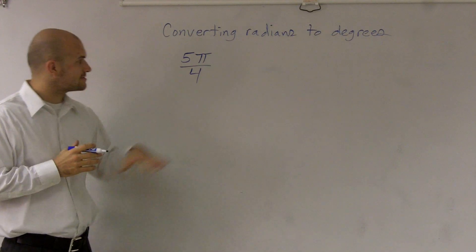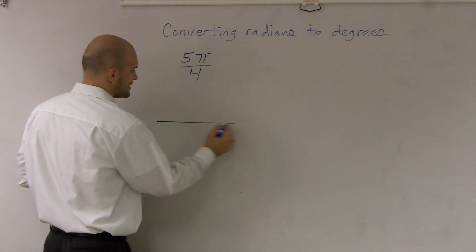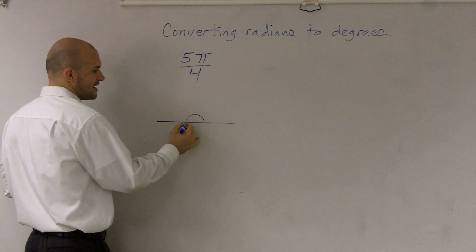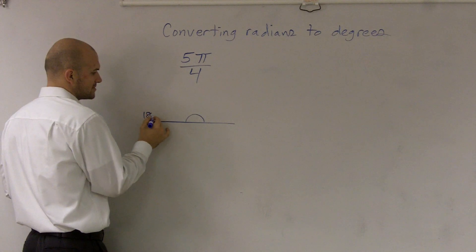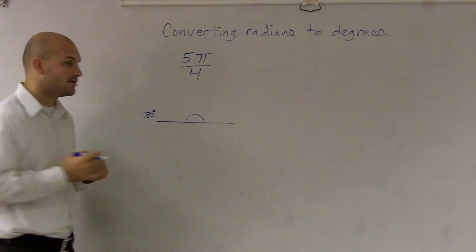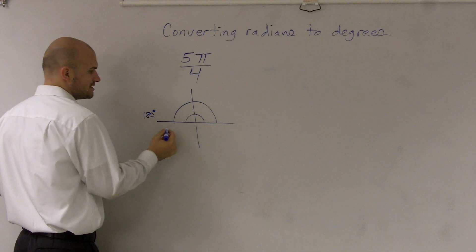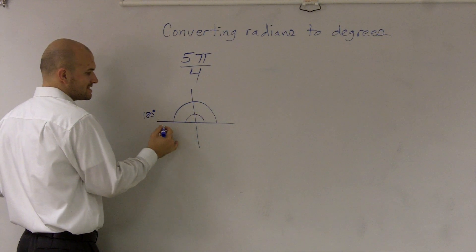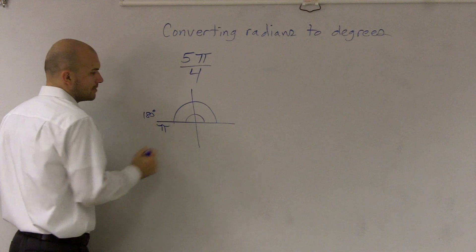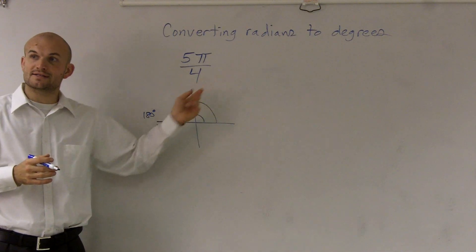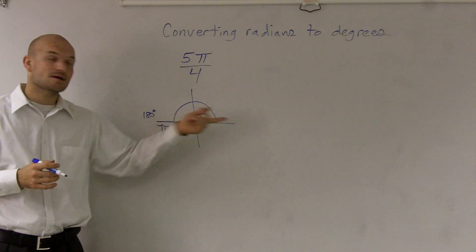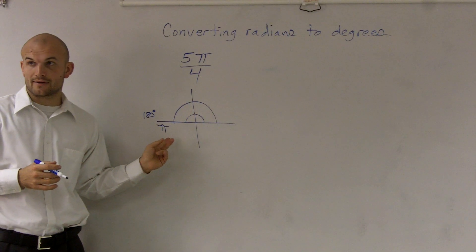Radians to degrees. So remember guys, when we're talking about radians and degrees, there's a couple things you guys remember. Do you remember that a straight angle is 180 degrees? Yes. Right? But now since we're bringing in this unit circle stuff we're talking about, we've talked about also going all the way around is the same thing as π, right?